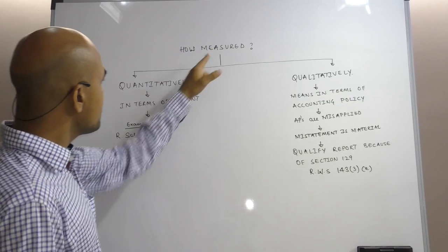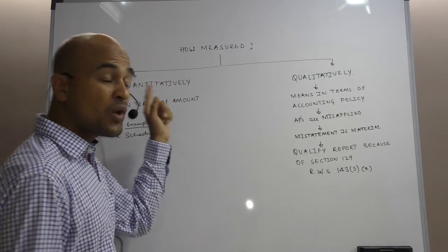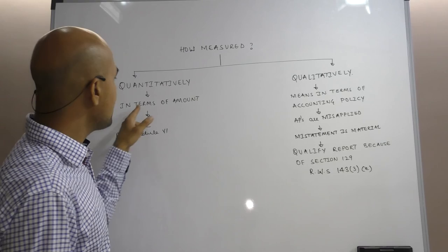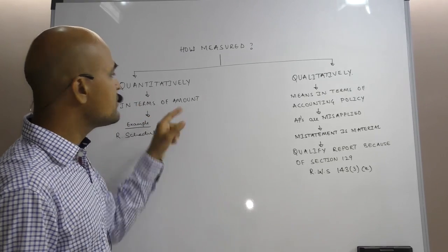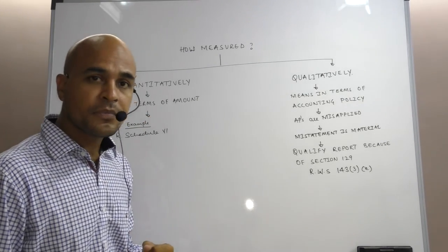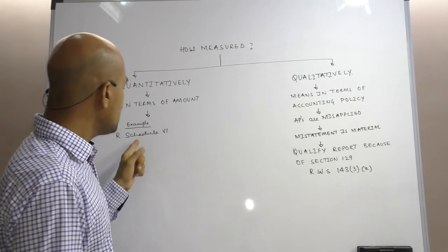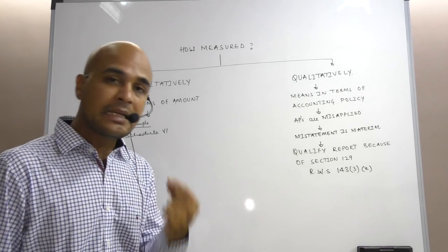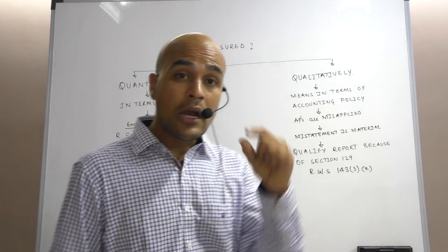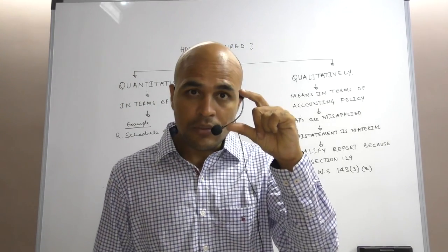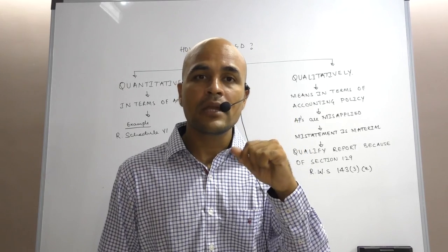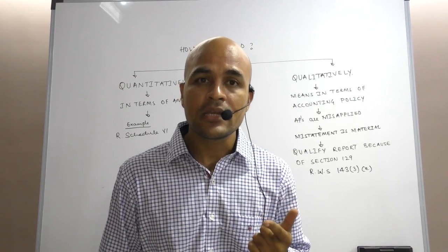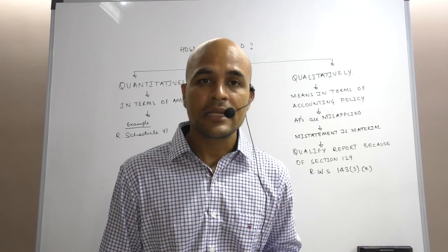When I say materiality can be measured quantitatively, I mean to say it can be measured in terms of amount. For example, Revised Schedule 6 clearly lays down the threshold amount for an item of expense or income to be termed as material.